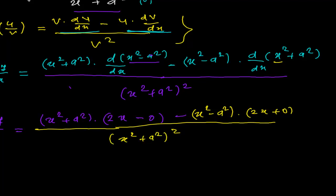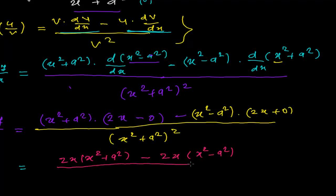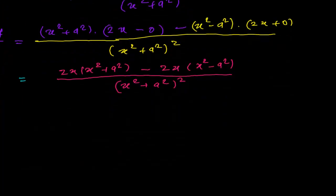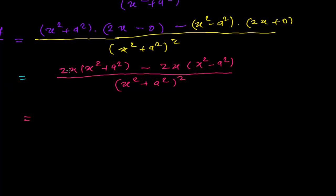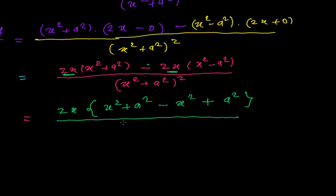Let's write this more neatly. We get 2x times (x squared plus a squared), minus 2x times (x squared minus a squared), all divided by (x squared plus a squared) squared. Now both terms have a factor of 2x, so we factor that out: 2x times [(x squared plus a squared) minus (x squared minus a squared)], which gives 2x times [x squared plus a squared minus x squared plus a squared], all divided by (x squared plus a squared) squared.